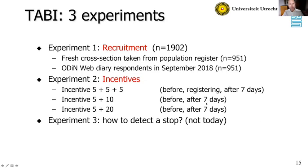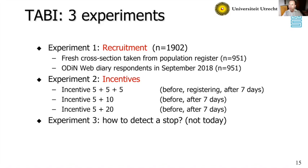When we did this test we wanted to test whether the app would work, but we were also interested in more fundamental questions about how to do these kinds of studies. We did three experiments in this app and I'll talk about two. The first concerns recruitment: we recruited people in two different ways. The first was a fresh cross-section from the population register, which is an individual register with addresses and some covariates. The second sample consisted of respondents who in the previous month had participated in the old diary study.